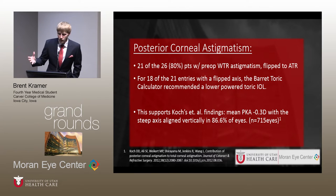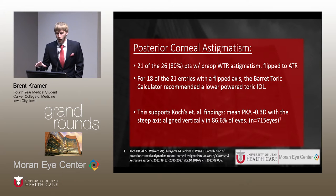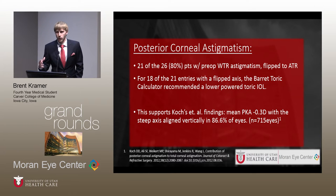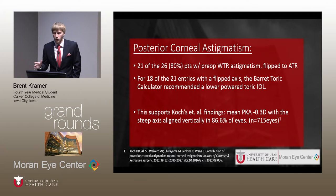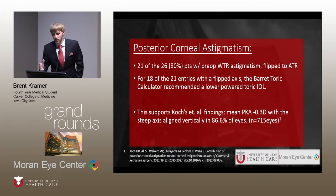When I retrospectively entered the data into the Barrett toric IOL calculator, 18 of those 21 cases were recommended a lower IOL power. One of the biggest differences between the Barrett and other calculators is that it considers posterior corneal astigmatism. This finding supports Koch's findings that there is a mean posterior corneal astigmatism of about negative 0.3 diopters in the steep axis in nearly 90% of eyes. Simply put, if you don't consider posterior corneal astigmatism, you will overcorrect with-the-rule astigmatism and potentially flip the axis to against-the-rule.